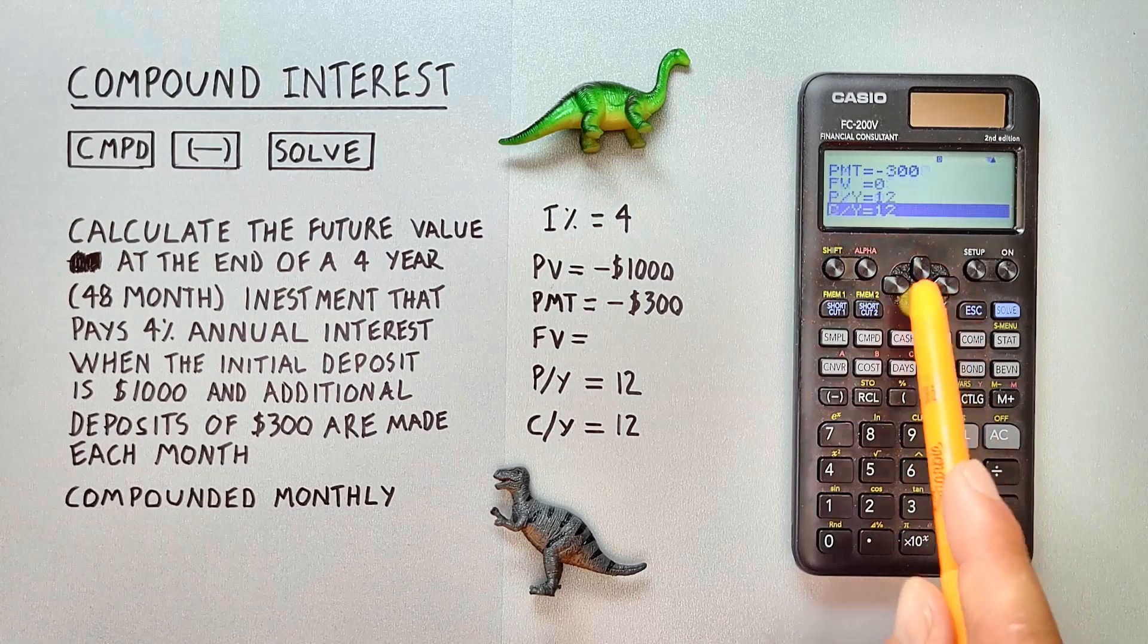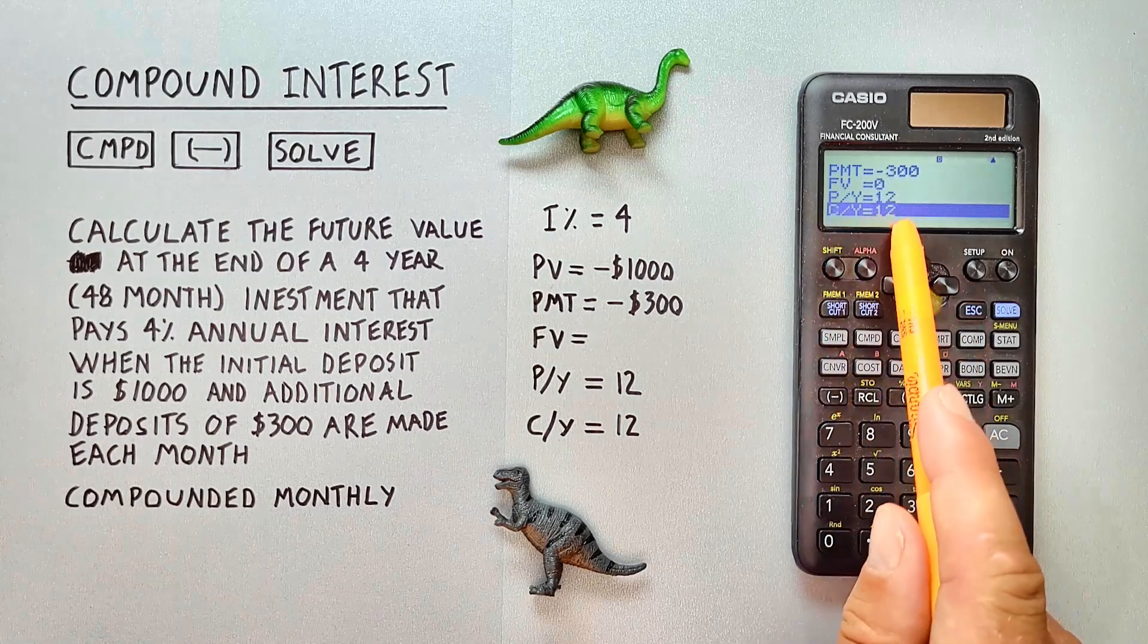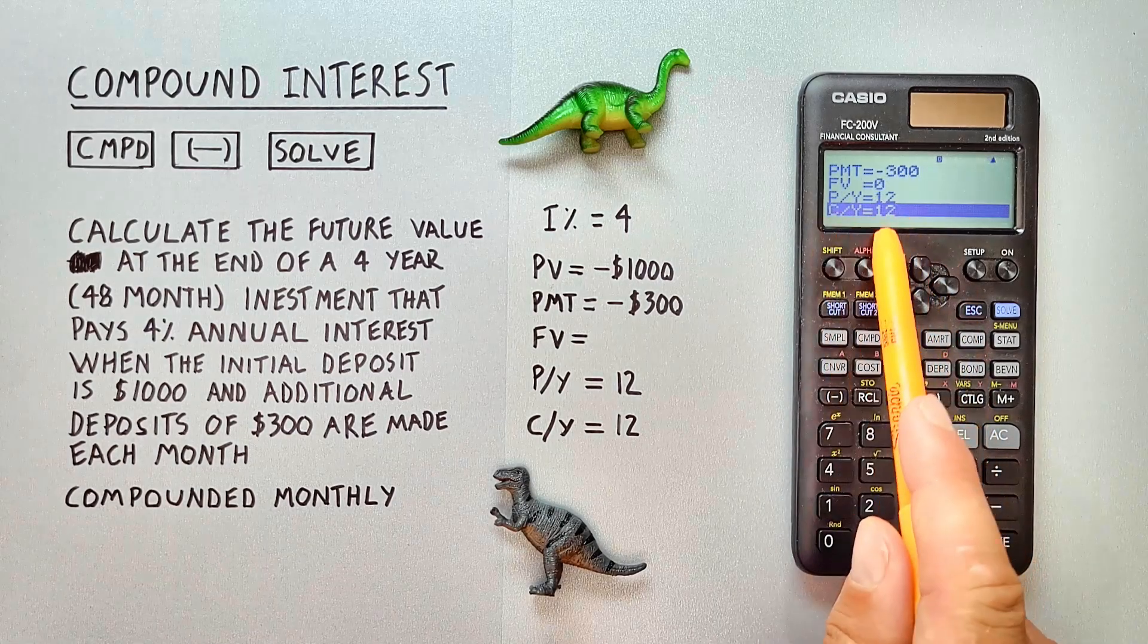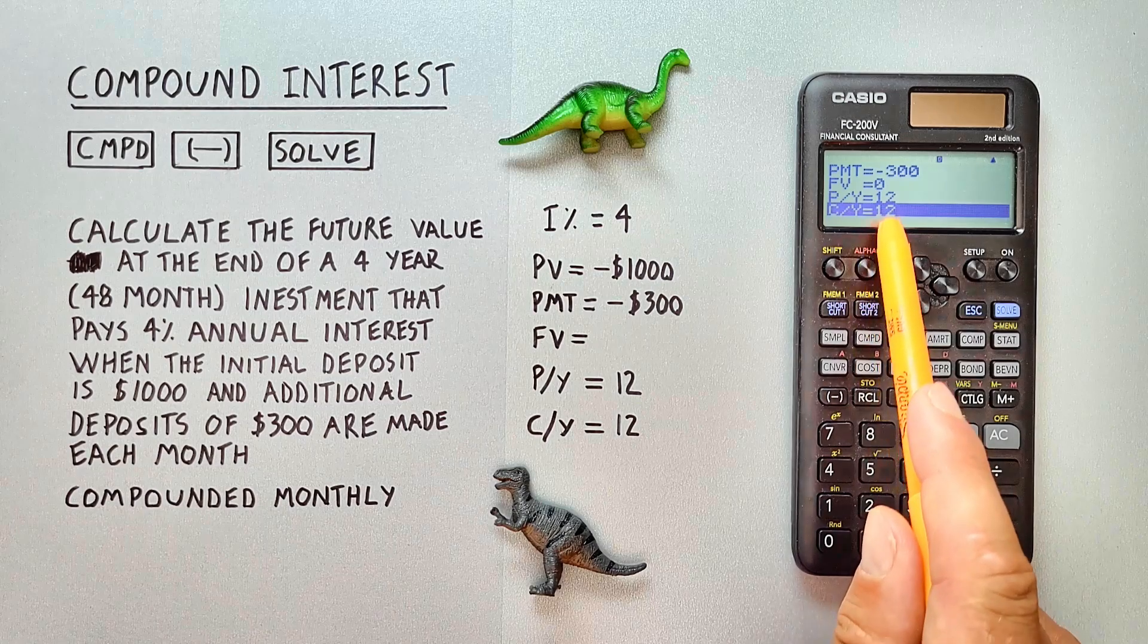And then our CY, which is also 12. Again, mine's already set to 12. If yours isn't, go ahead and enter 12 there.